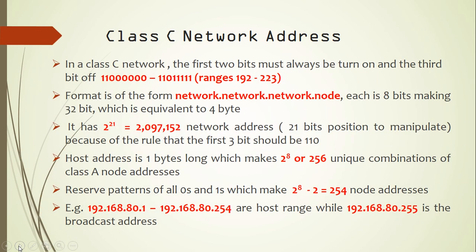For a class C network address, the first two bits must always be on and the third bit is off. With those three bits fixed, I have five bits left to vary. Converting to decimal, this gives a range from 192 to 223. So if you see a network address like 194 or 200, that is a class C network address. The format is network.network.network.node — the first three bytes are the network path and the last byte is the node path.